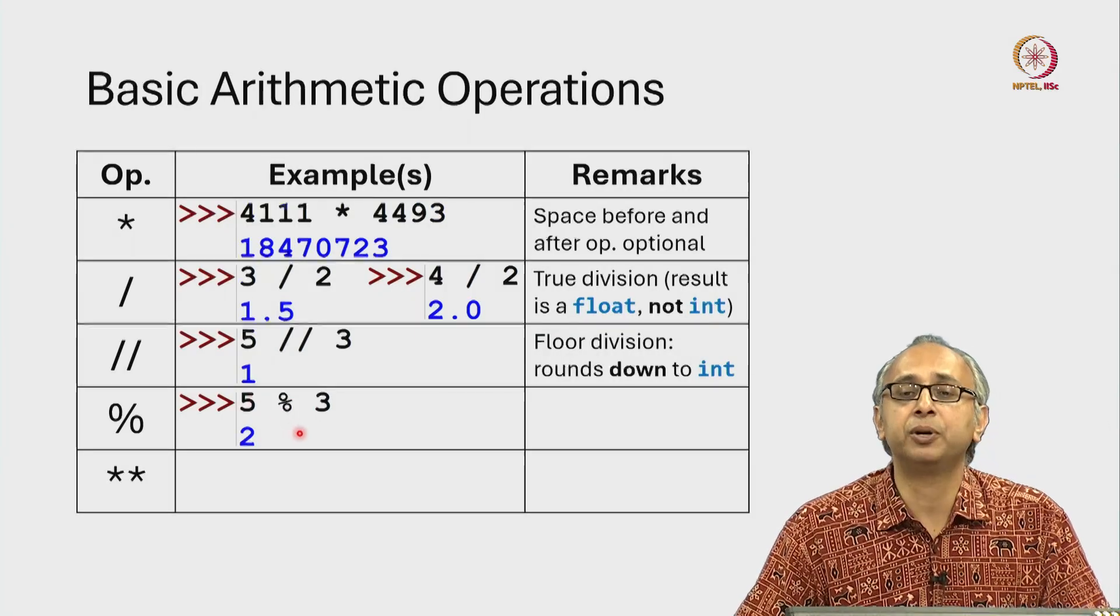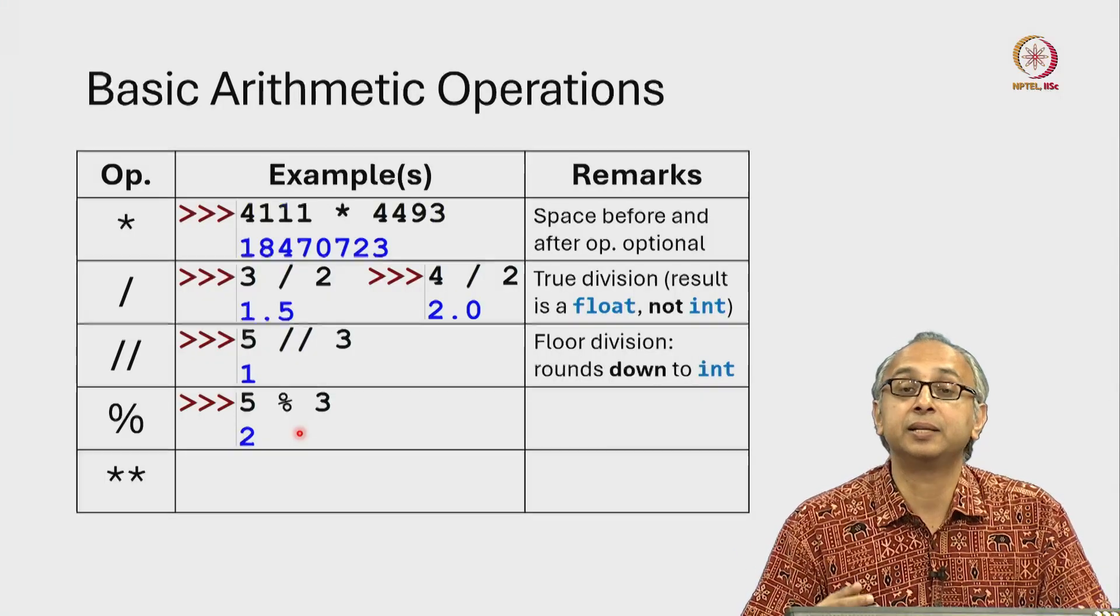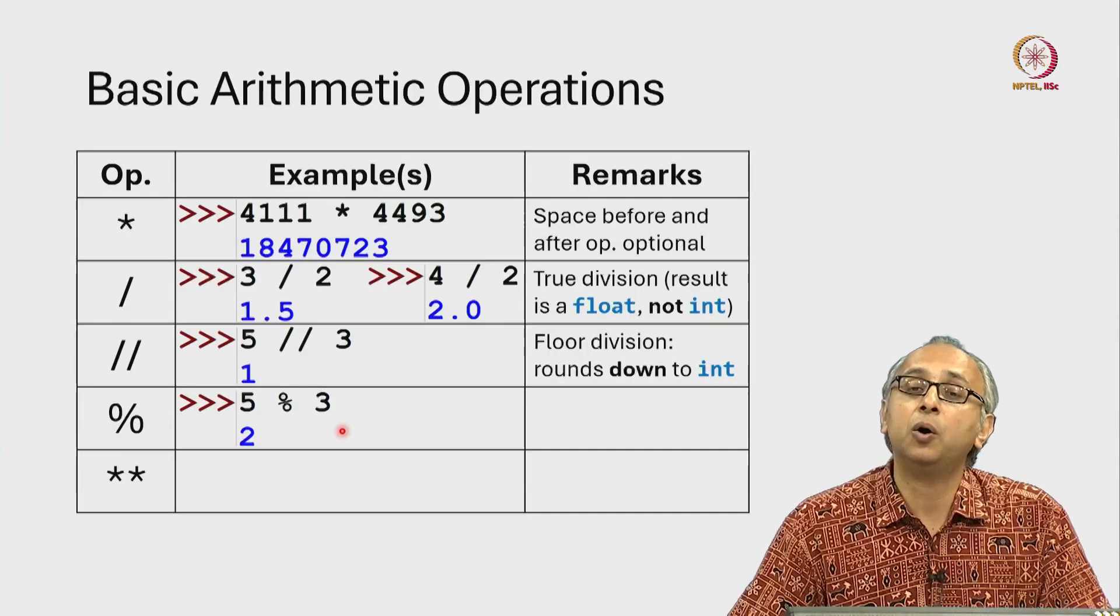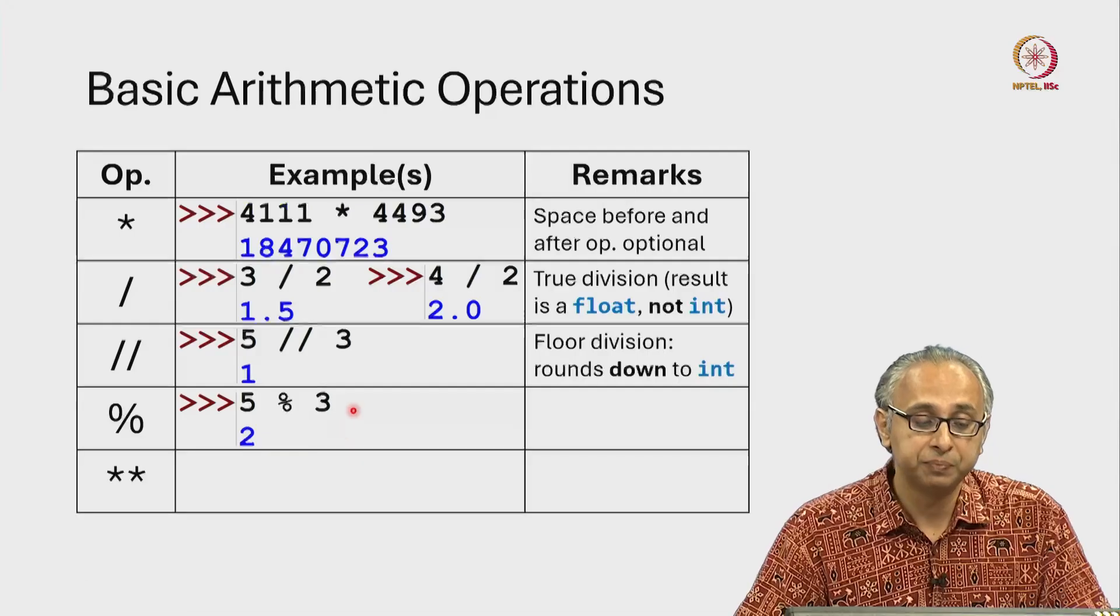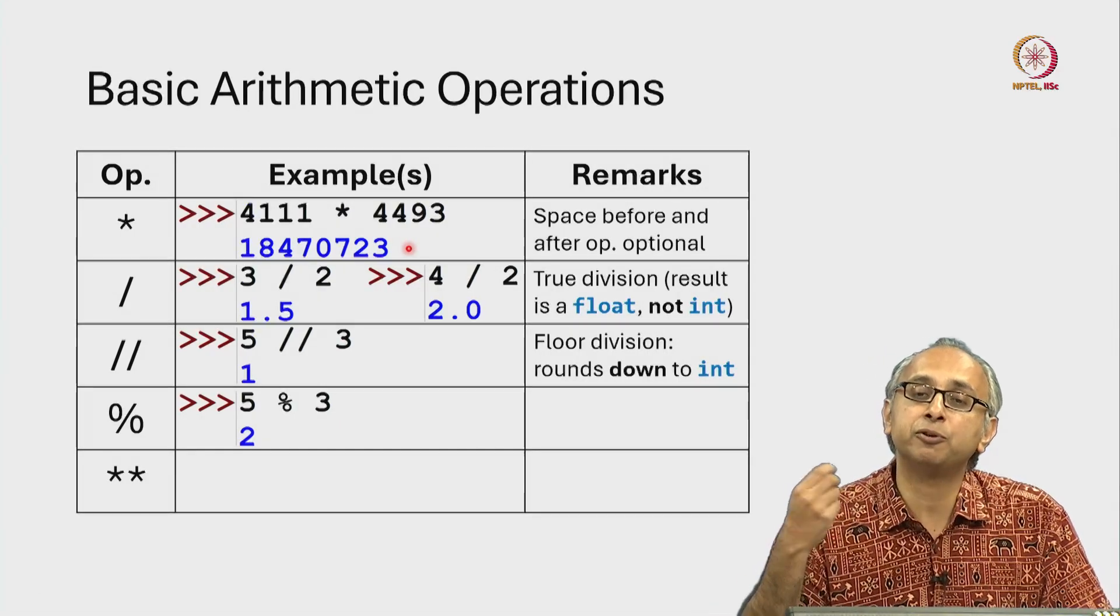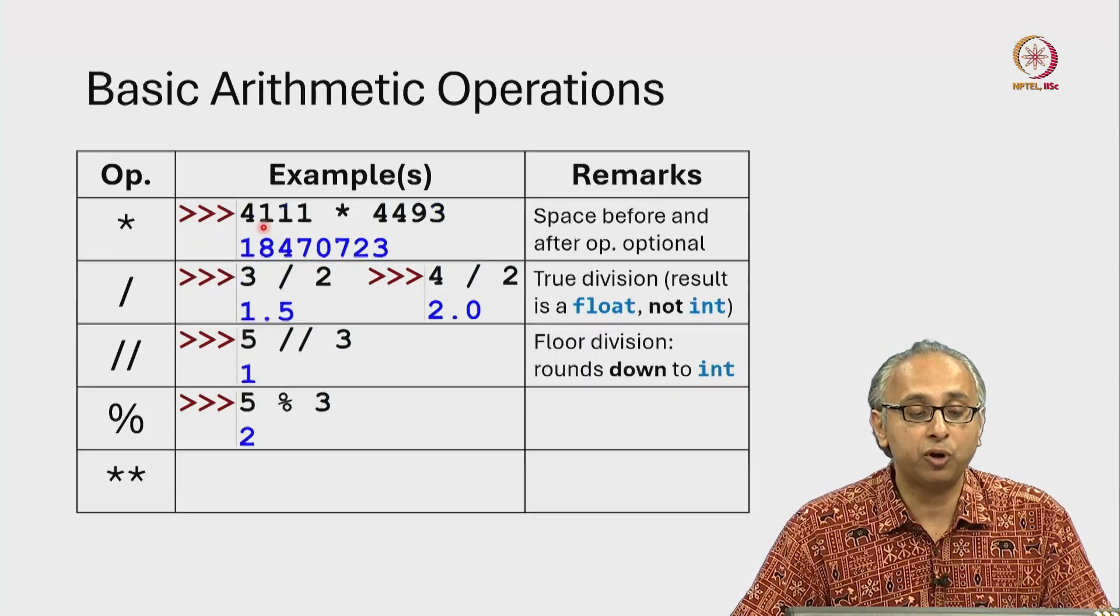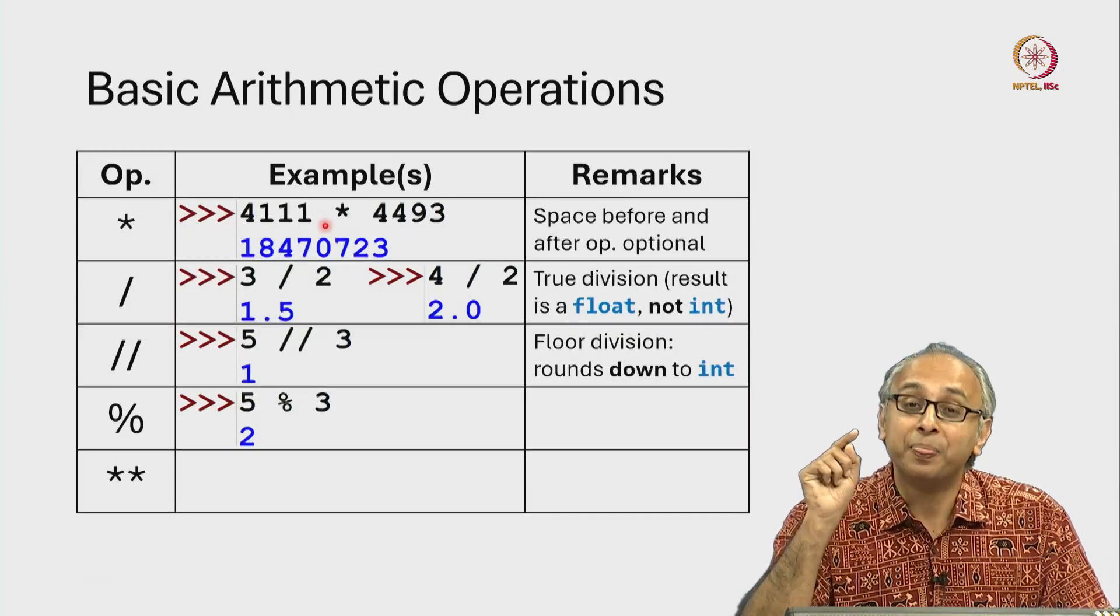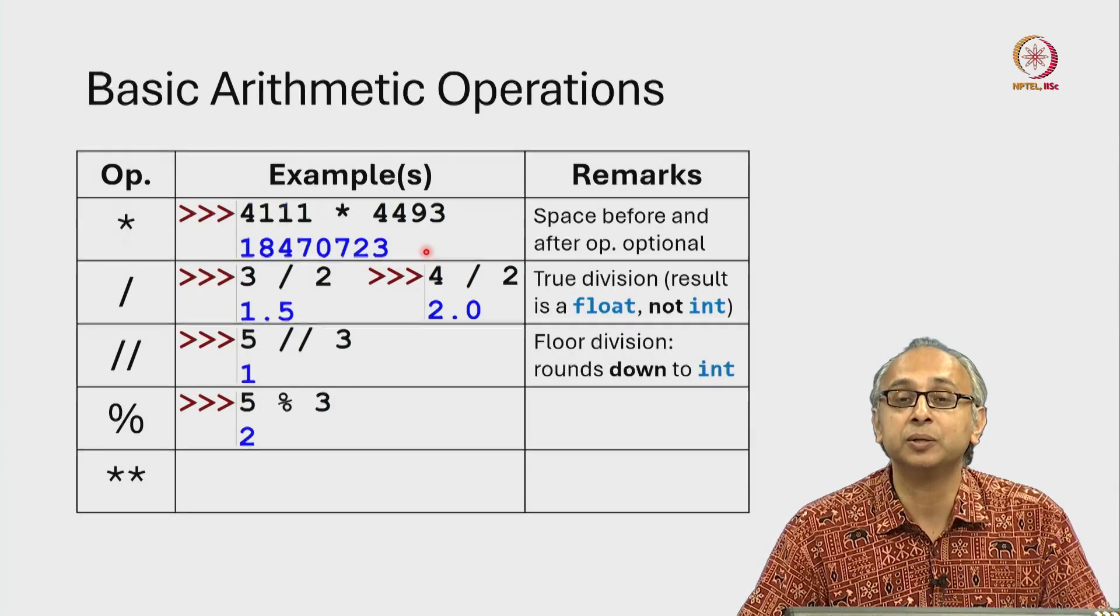This remainder operator is extremely useful if you want to check if a number is even then you would do remainder with 2 or when we want to check if a number is prime or not. This large number we discovered it's not prime because we found a factor. So for example this large number remainder 4111 would give us the remainder 0 and that would convince us that this large number is in fact not prime.